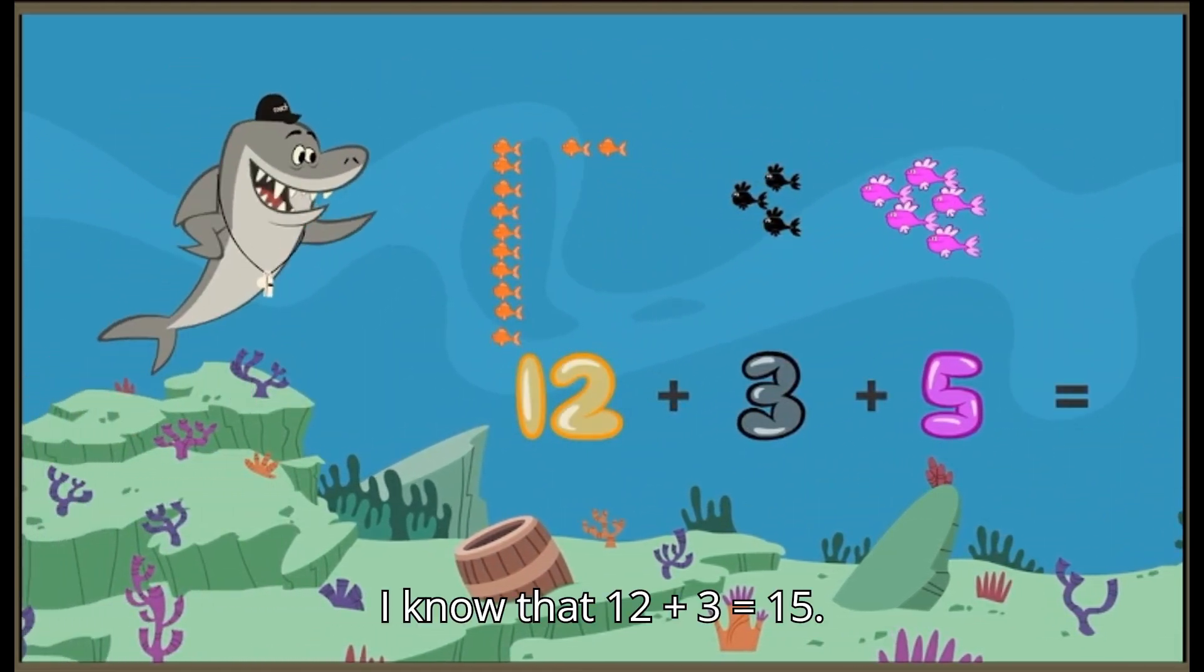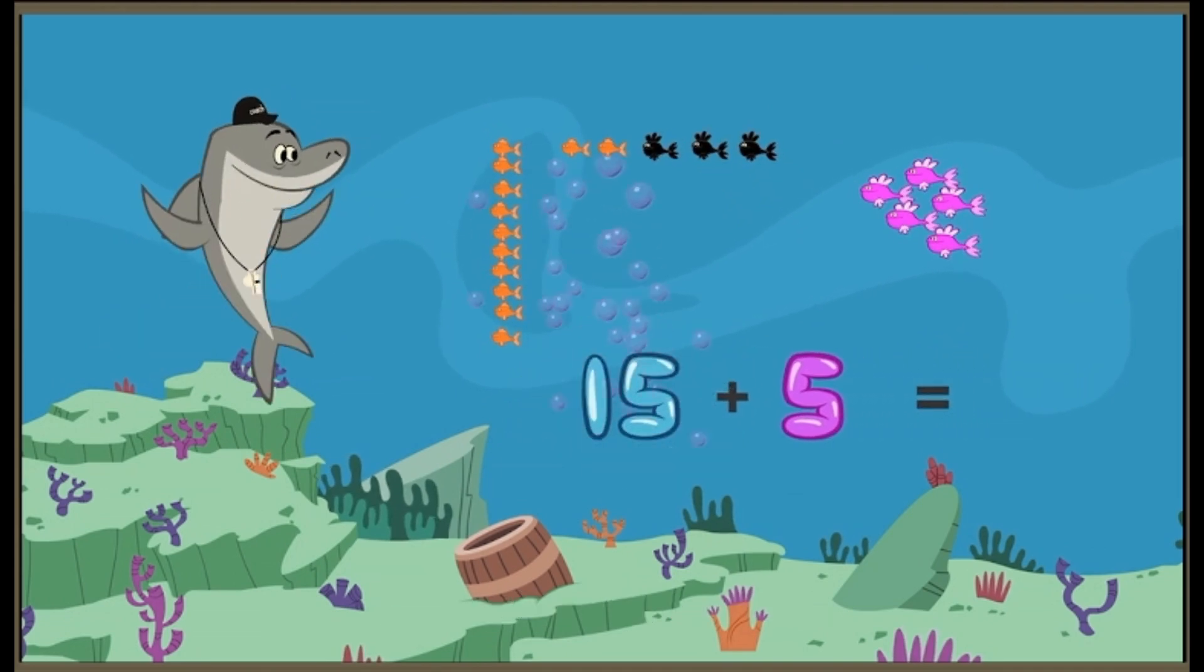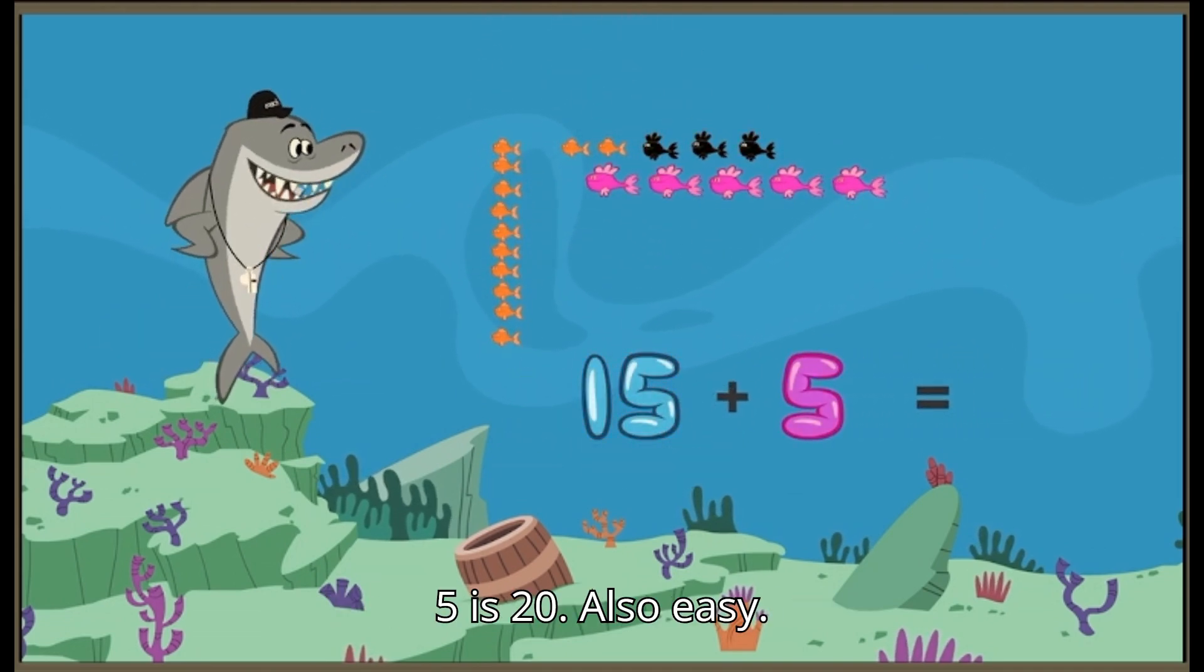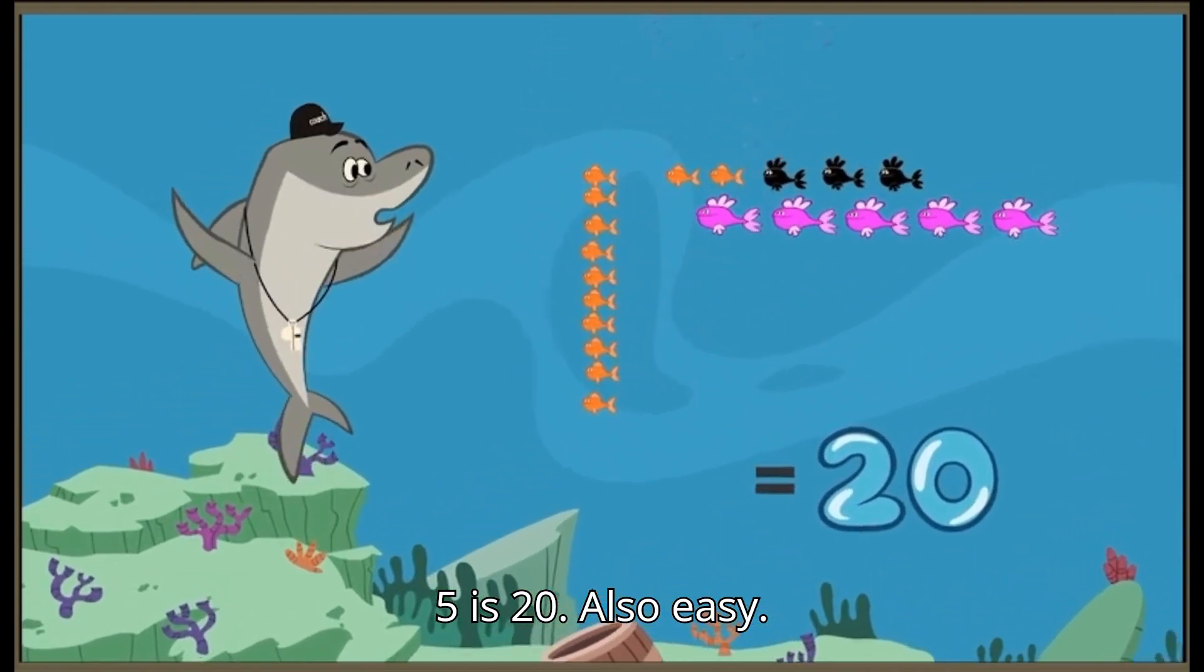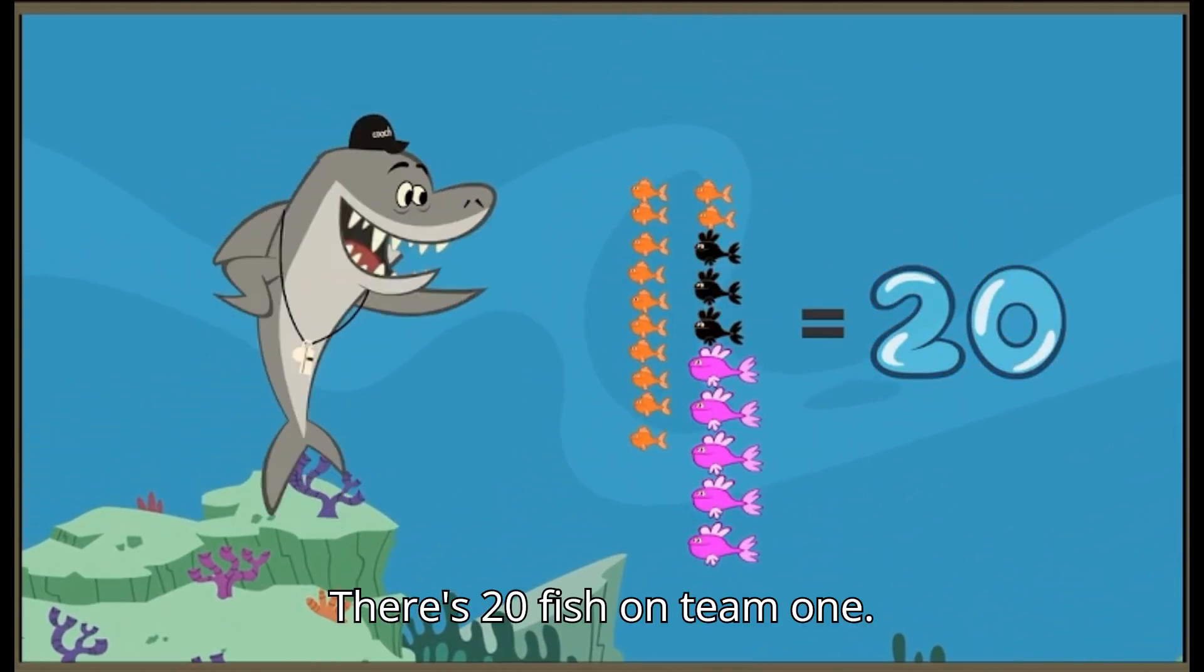I know that twelve plus three equals fifteen. That's an easy one. And fifteen plus five is twenty. Also easy. There's twenty fish on team one.